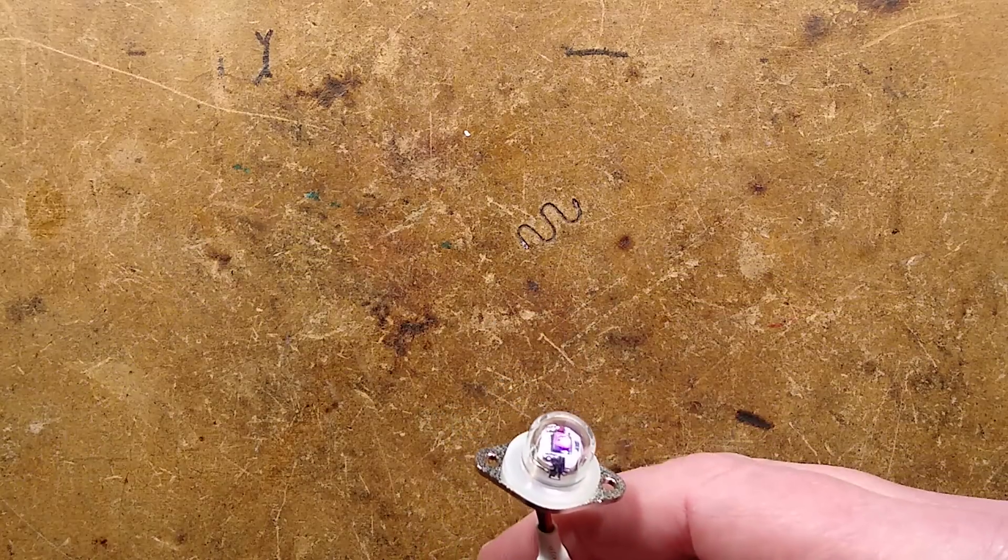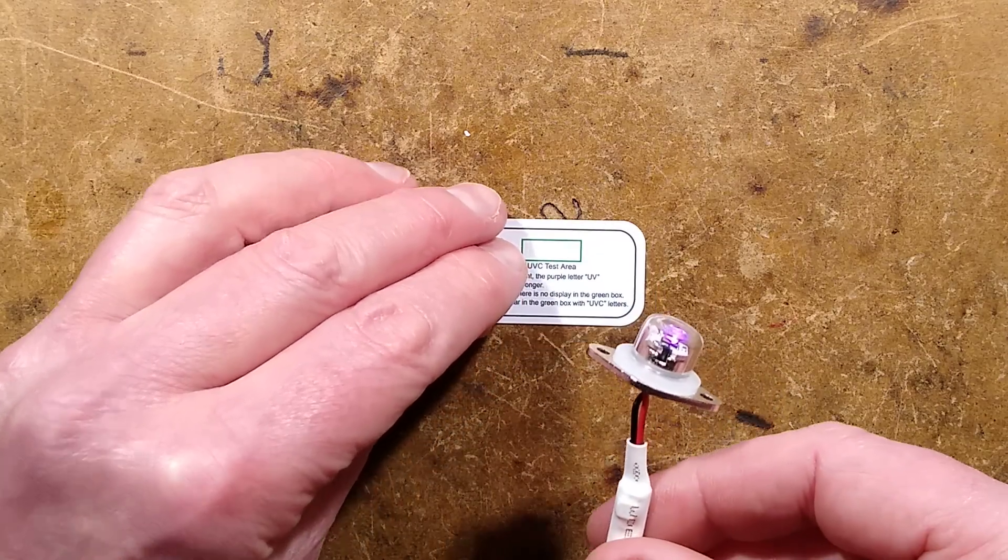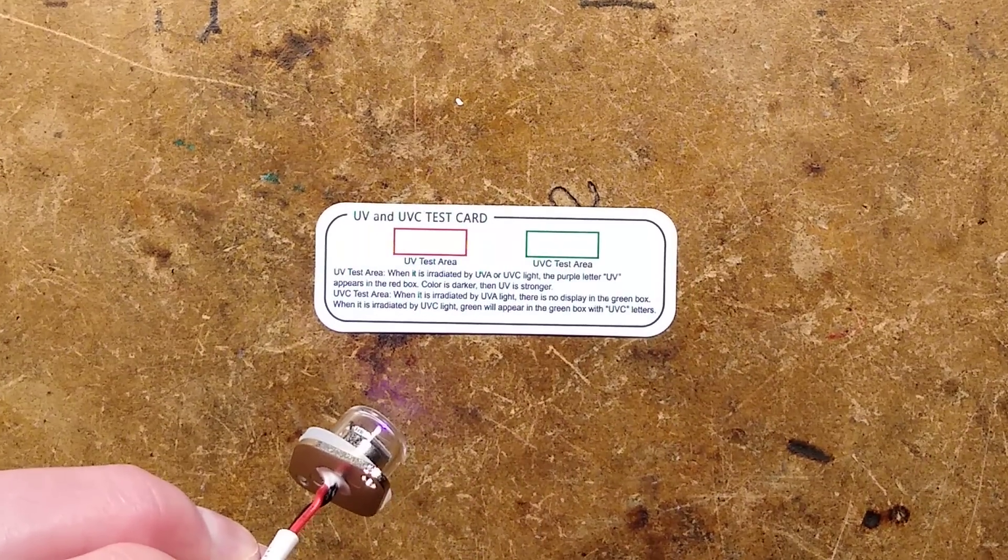I do have the UVC test card down here. If I zoom down, this is where it all gets super grainy because this is maximum zoom.